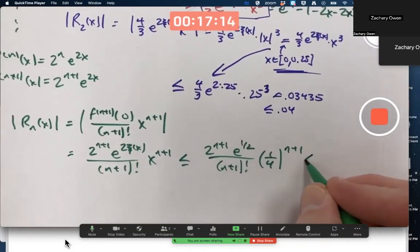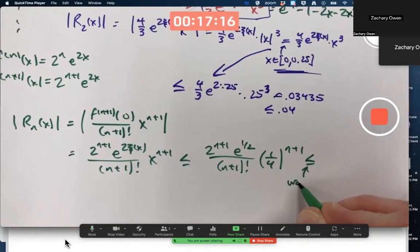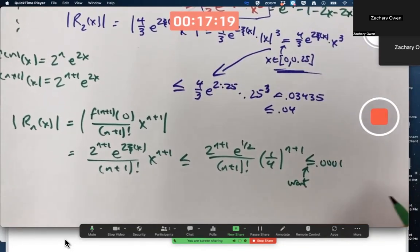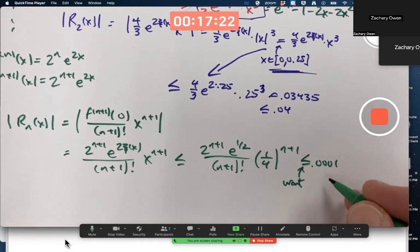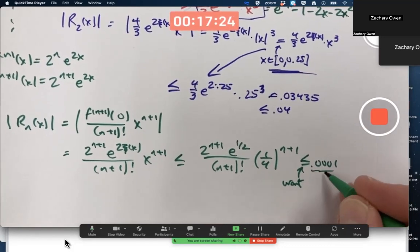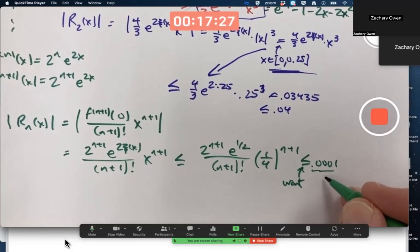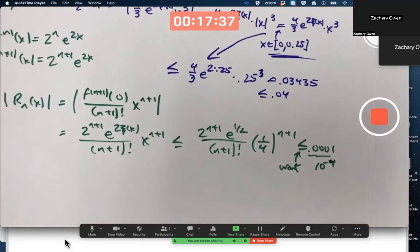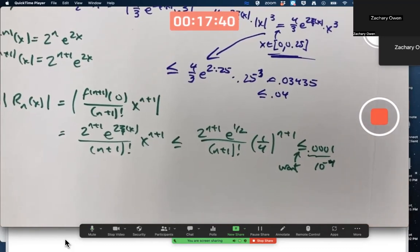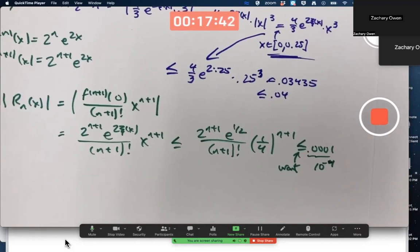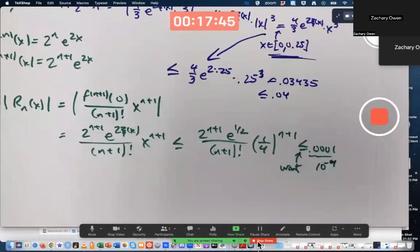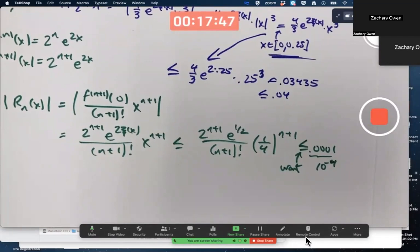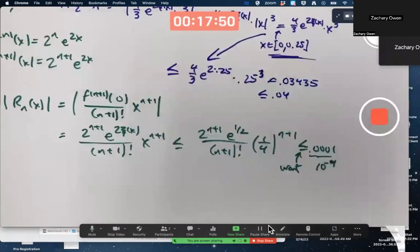Say we wanted to choose n so that this is less than 0.0001. How big should n be? This would be 10 to the what? 10 to the negative 3? 10 to the negative 4. It's 10 to the negative 4 right there. I could make it even smaller. As far as doing this, use technology. It's not something you can really algebraically solve for n here.